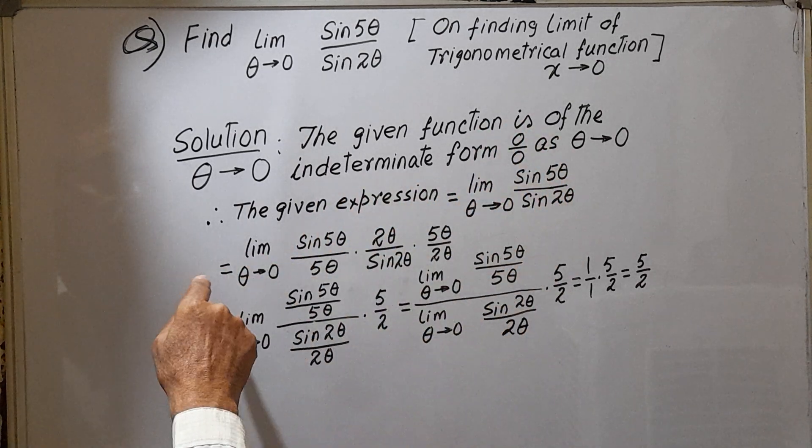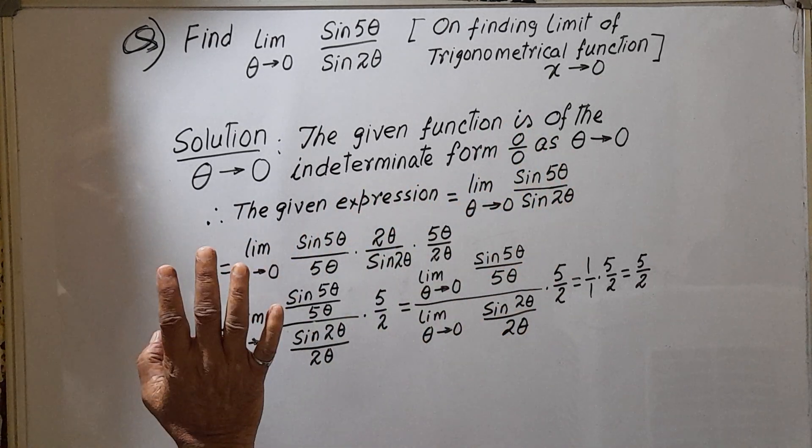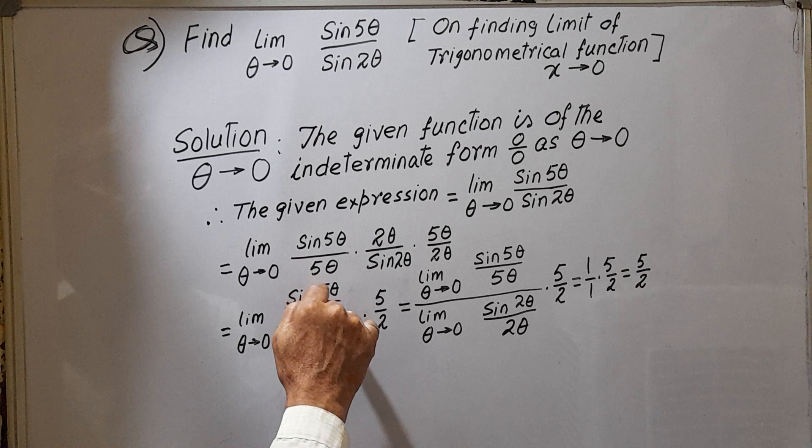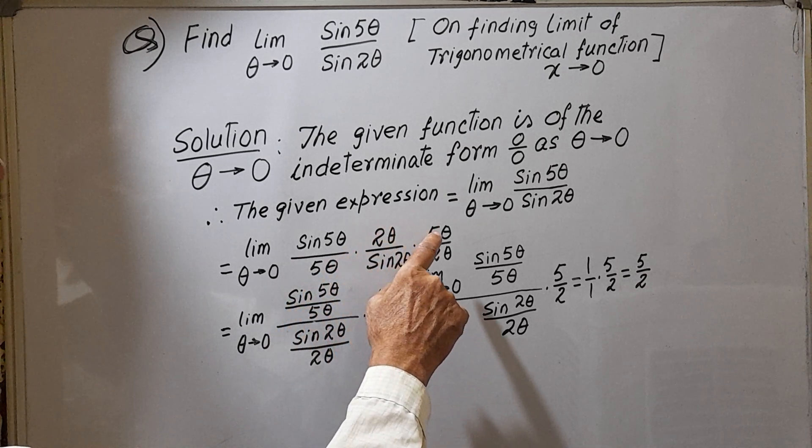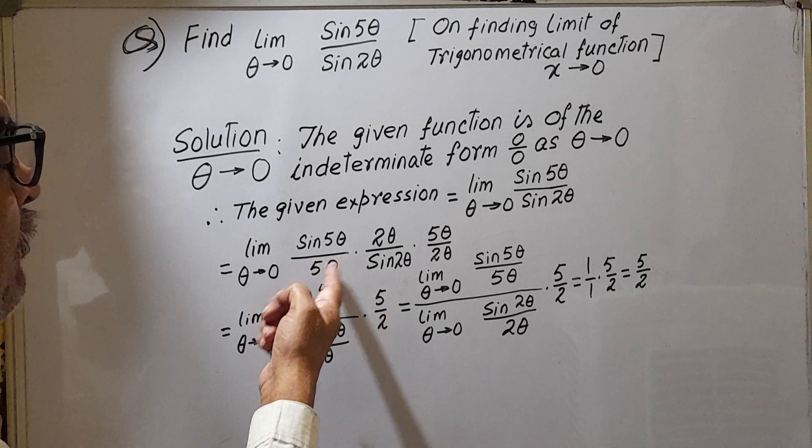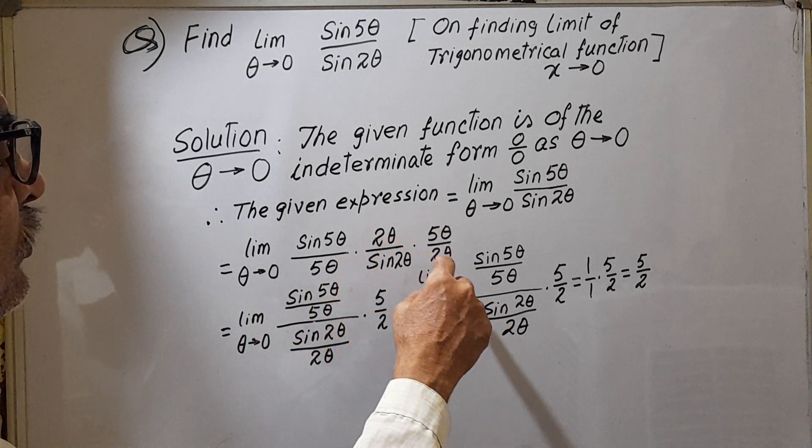So equal to limit theta tends to 0, sin 5 theta by 5 theta, into 2 theta by sin 2 theta, into 5 theta by 2 theta. Now you see, 5 theta 5 theta cancel, 2 theta 2 theta cancel.